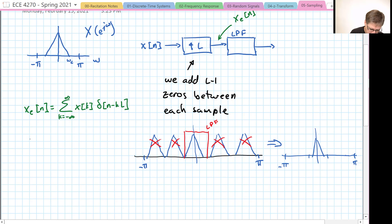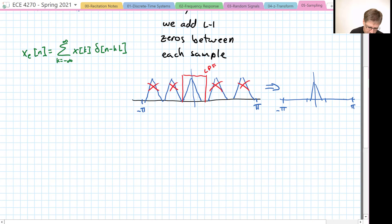What does the frequency domain version of this look like? We have x e to the j omega equals the sum over n of x of n, which is the sum over k, x k, delta n minus kl, times e to the negative j omega n.